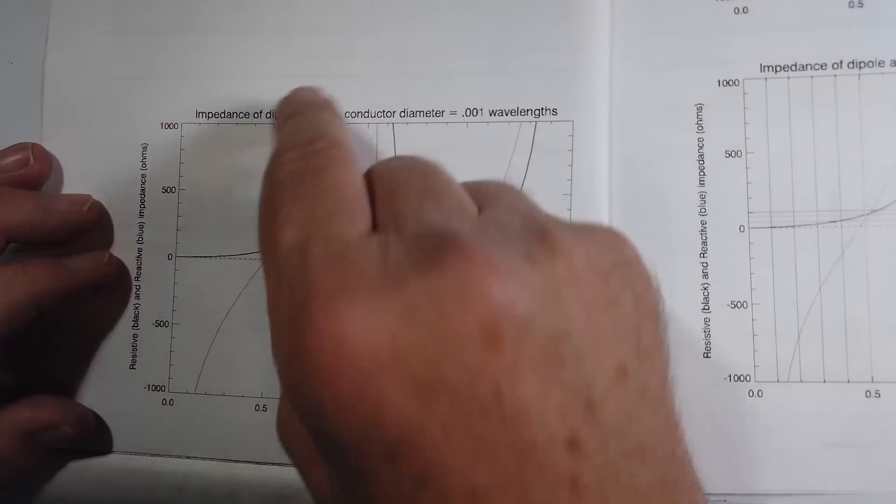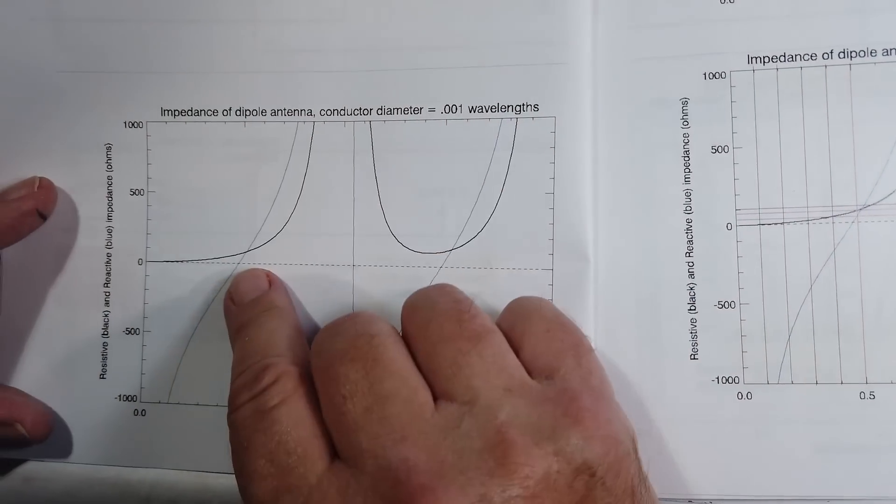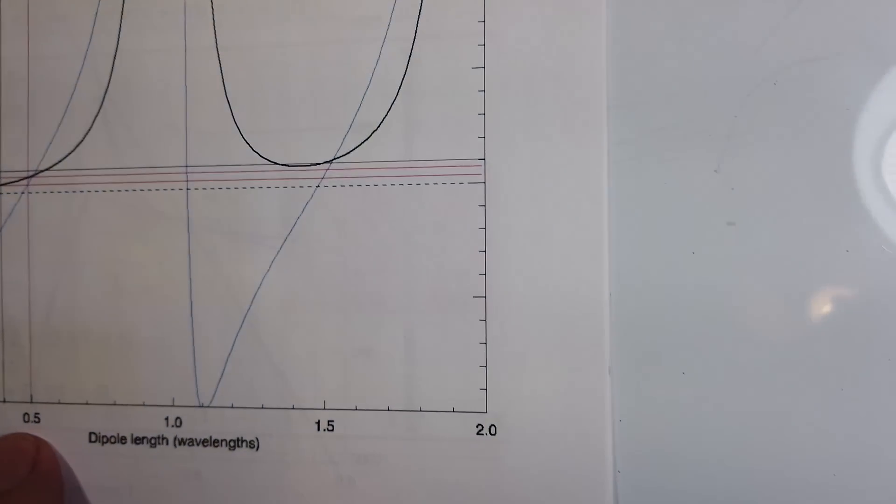If you've got negative, it's inductive. If it's capacitive, it's too short, and so on. So if you're at a half wavelength, you're up in this region right here.